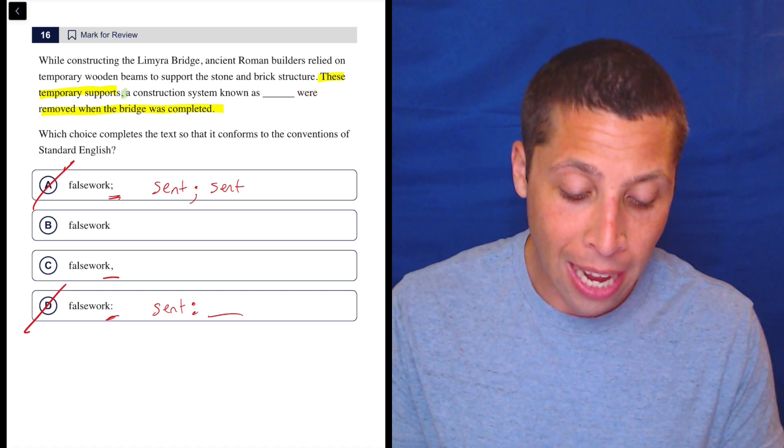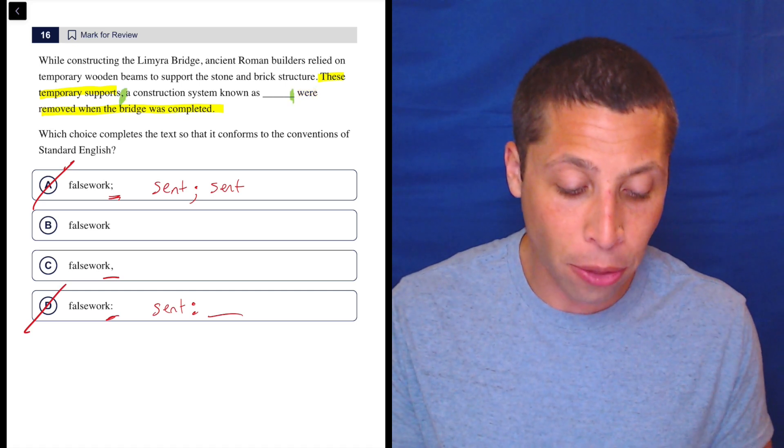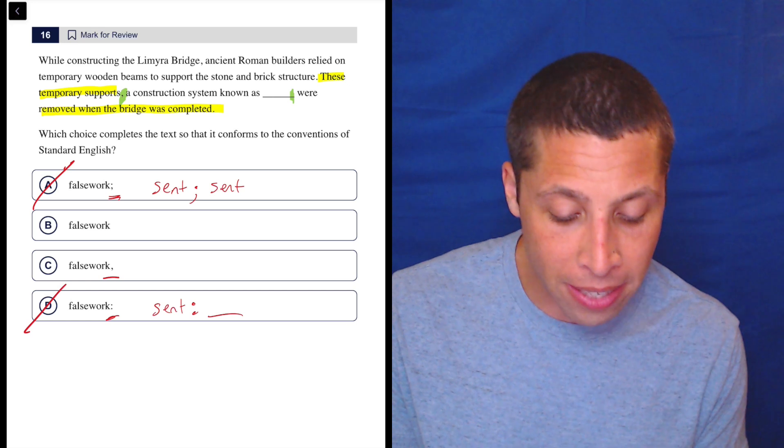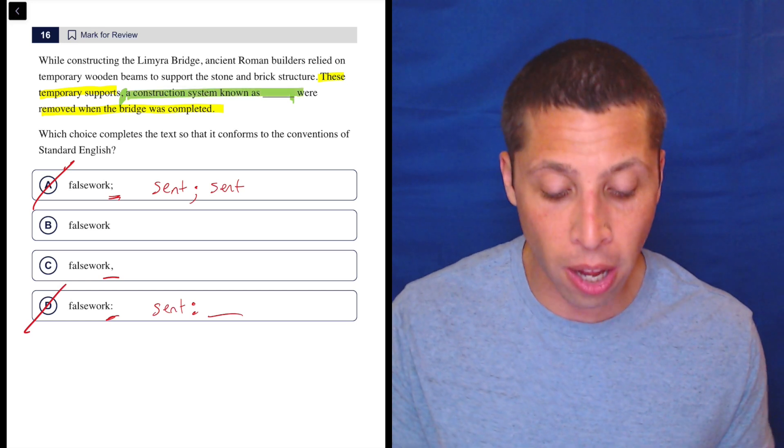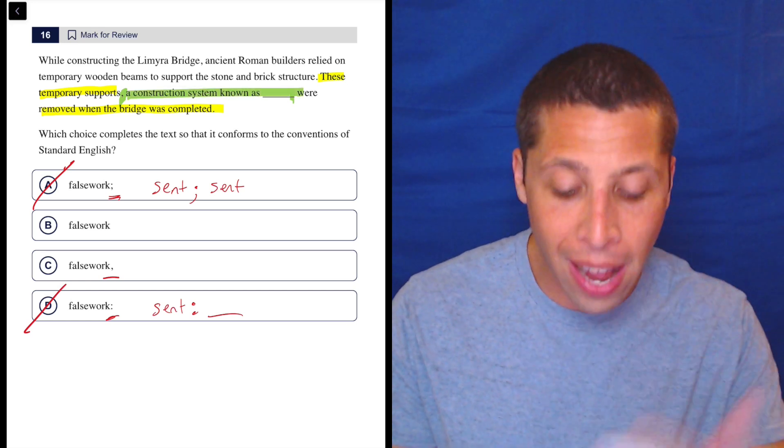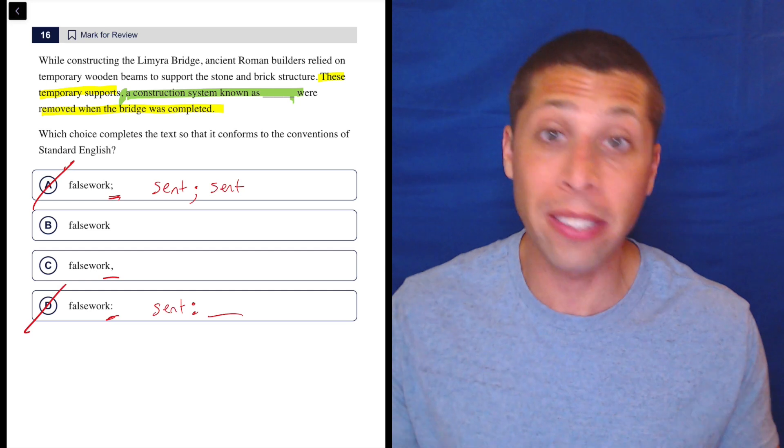We are using a comma after supports and then another one right here before were to show that this piece in between is an extra clause. It is a definition defining the temporary supports. Basically, it's an appositive here.